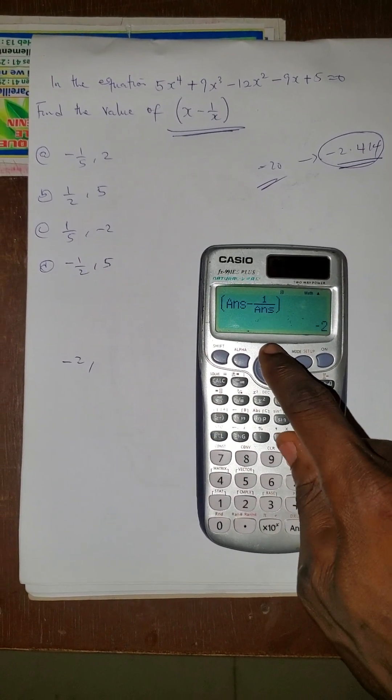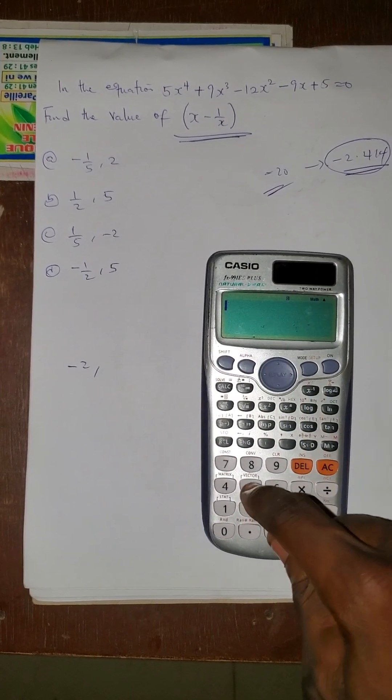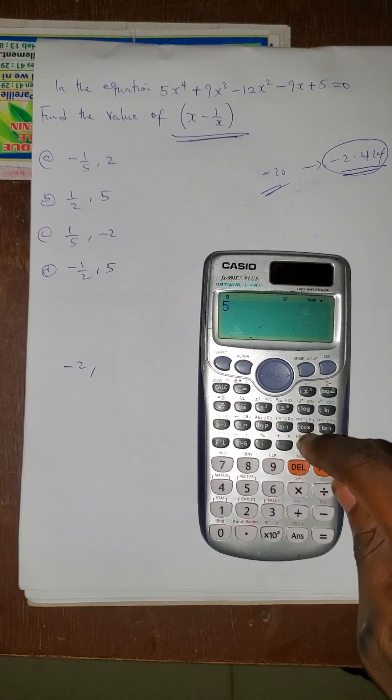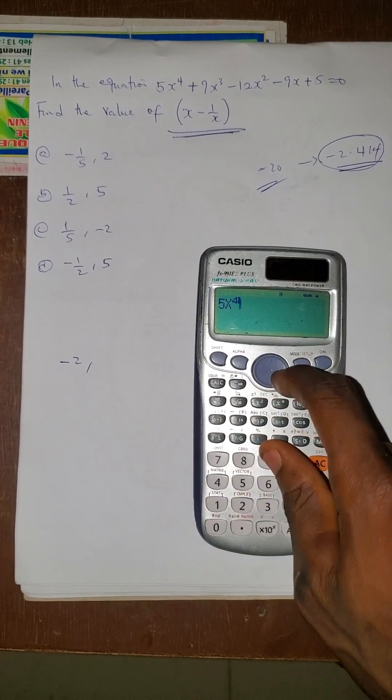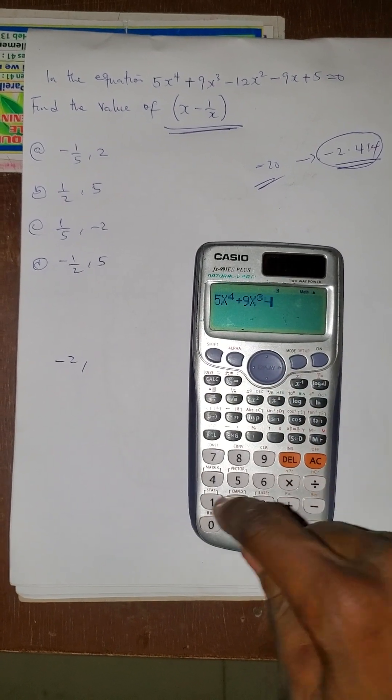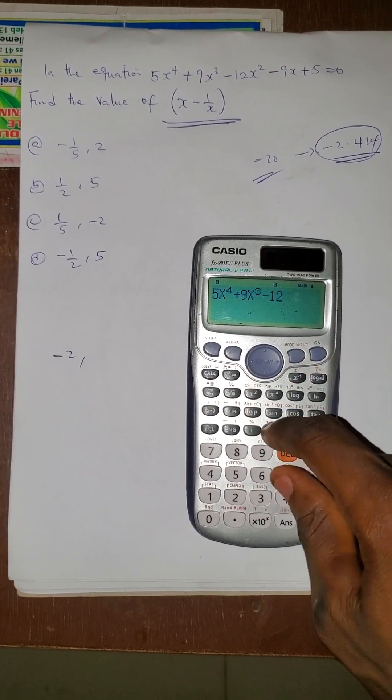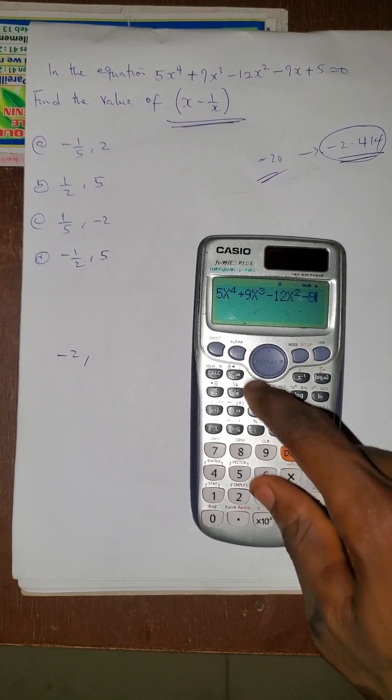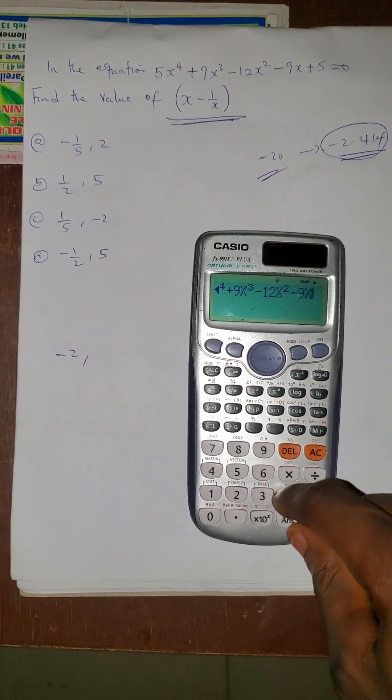I press the value again. 5 alpha x⁴, plus 9 alpha x³, minus 12, then alpha x², minus 9 alpha x, plus 5.